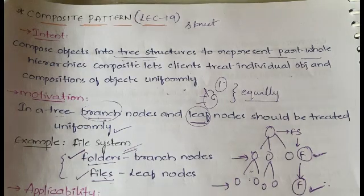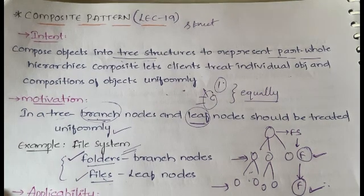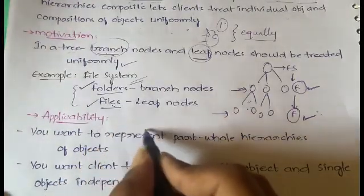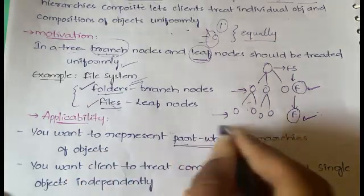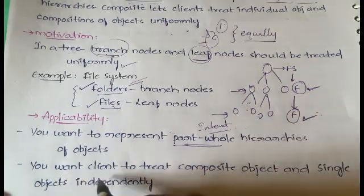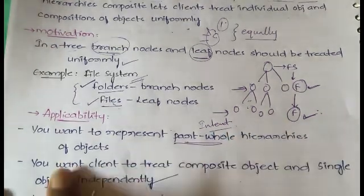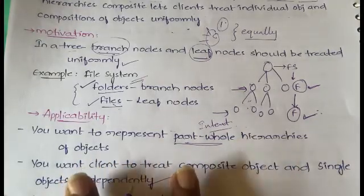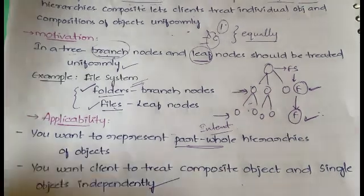Coming to applicability: you can use the Composite design pattern when you want to represent part-whole hierarchies of objects, and when you want the client to treat composite objects and single objects independently and uniformly. In that situation, the Composite design pattern is the right choice.